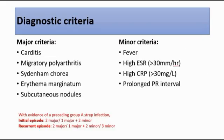There is a diagnostic criteria for acute rheumatic fever, which is divided into major criteria and minor criteria. The major criteria consists of five things, which includes carditis, migratory polyarthritis, Sydenham's chorea, erythema marginatum, and subcutaneous nodules.